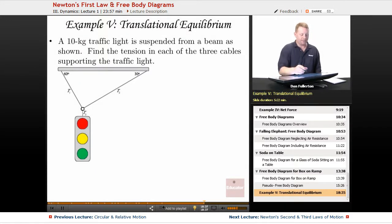Put all this together. We have a 10 kilogram traffic light suspended from a beam as shown. Find the tension in each of the three cables T1, T2, and T3 supporting the traffic light.